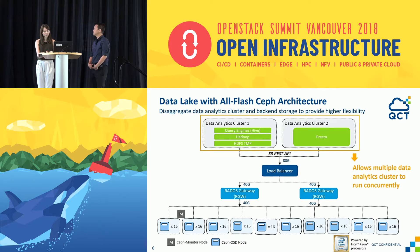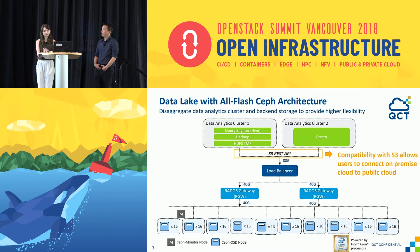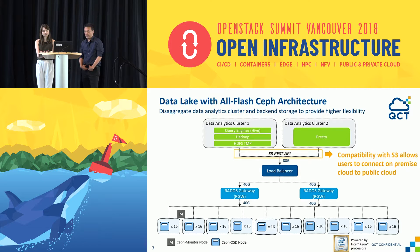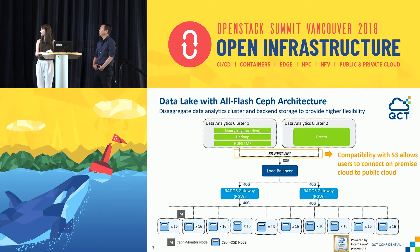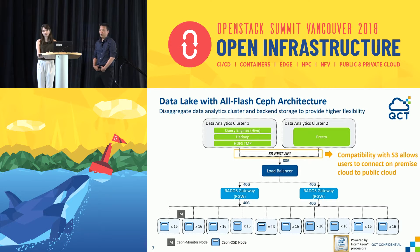The next slide explains why we use S3 as a protocol. S3 is leveraged in this architecture to store and retrieve data between Hadoop data nodes and Ceph OSD nodes. One key benefit of the S3 API is that you can use it on-premises, and later if you decide to move to Amazon Cloud, you can just leverage the S3 protocol to move data back and forth.